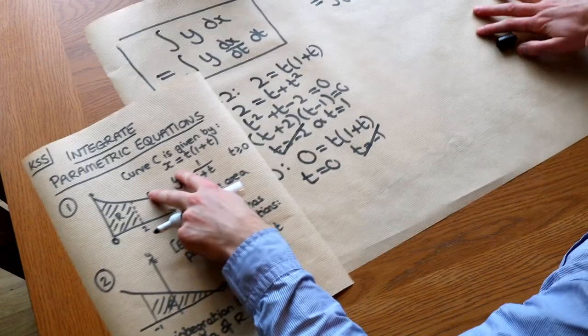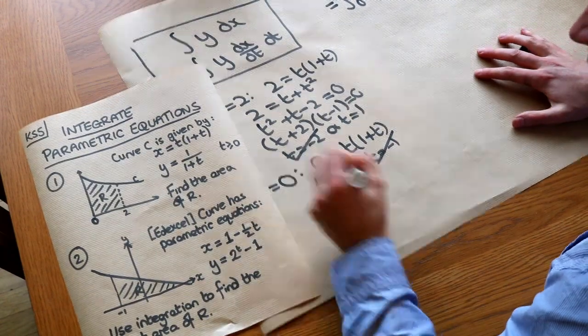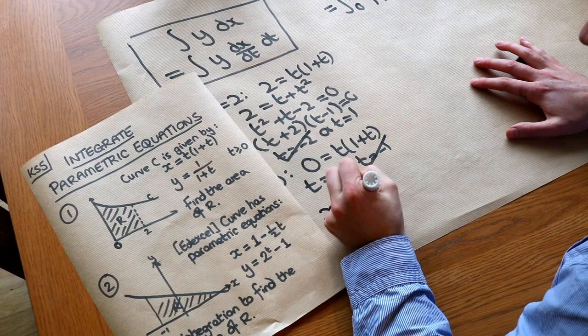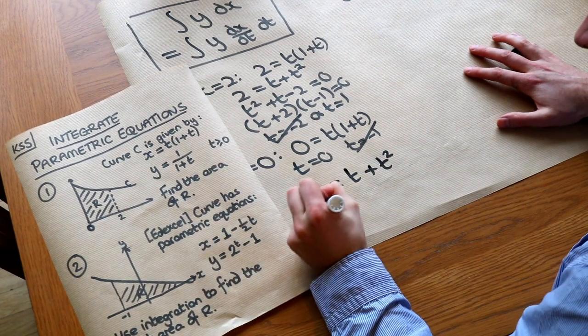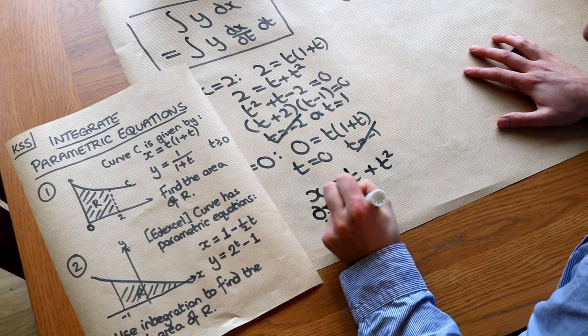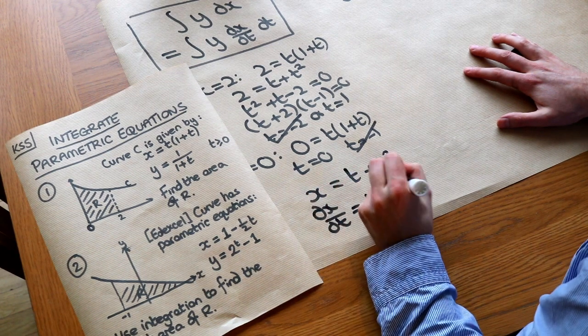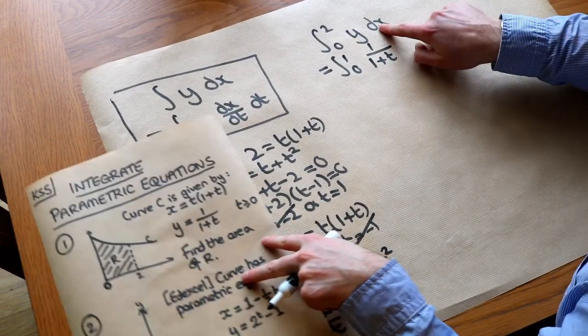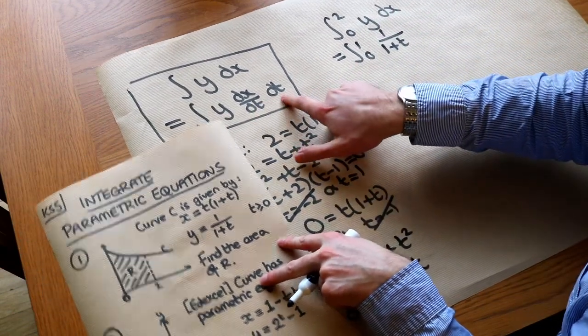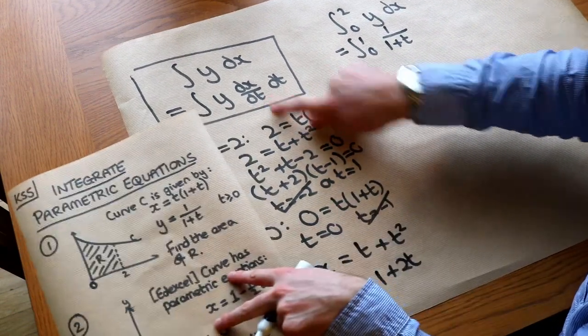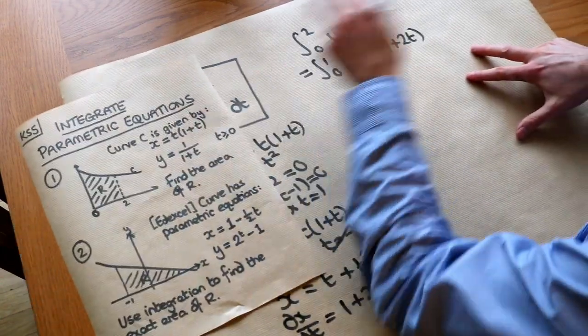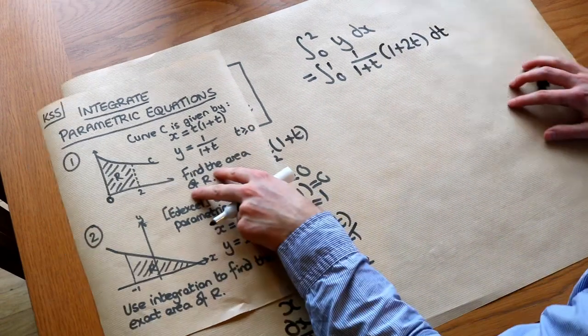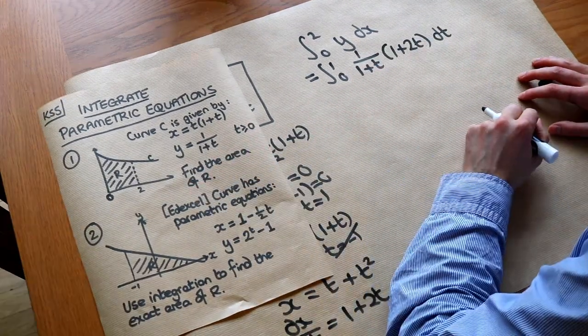Now let's do that separately down here. If X was T times (1 plus T), well that's T plus T squared, if we find DX over DT by differentiating this, we get 1 plus 2T. So now this DX, if we replace it for DX over DT, DT, the DX over DT is 1 plus 2T, and then we've got the DT here. And this is great because now we're doing an integration just in terms of T.